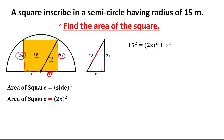Simplifying: 15 squared equals 225. Then (2x)² equals 2² times x², which is 4x². So we have 225 equals 4x² plus x², which simplifies to 225 equals 5x².